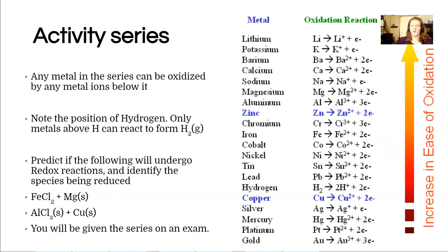So the iron 2 plus FeCl2 is right there, and the magnesium is right here. So yes, that's going to react because the metal is above the ion. Aluminum and so aluminum Cl3, so that's the ion, it's in the compound, and copper will not react because the copper element is below the aluminum ion.